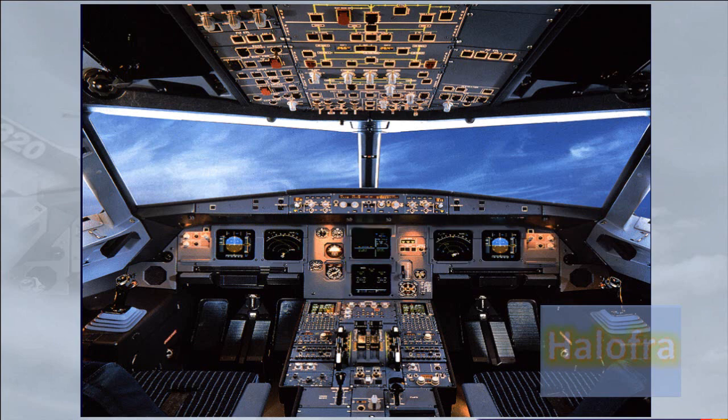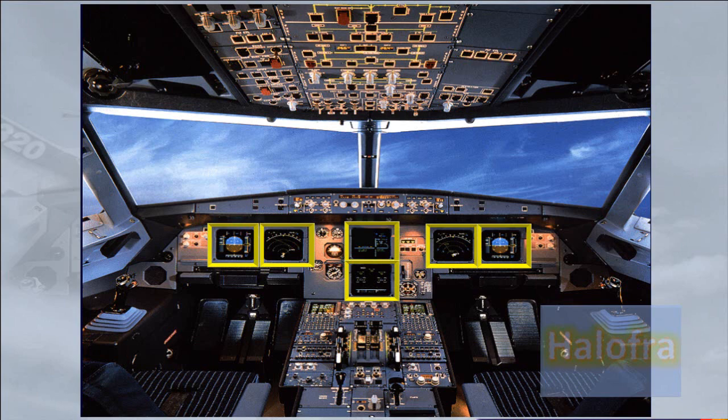The EIS is divided into two subsystems. The electronic flight instrument system, EFIS, for which each pilot has two displays. The electronic centralized aircraft monitoring system, ECAM, which uses the two displays in the center to provide information on the aircraft systems.